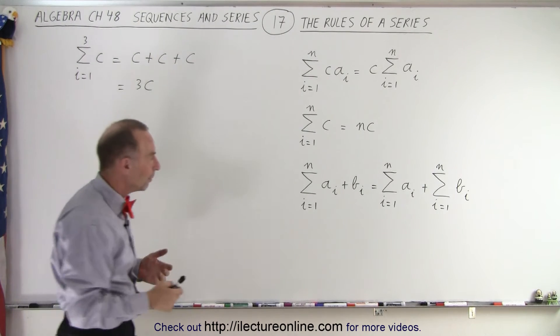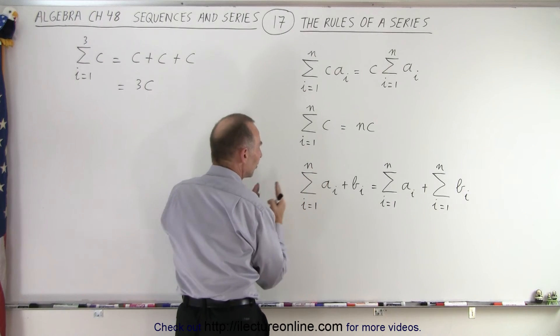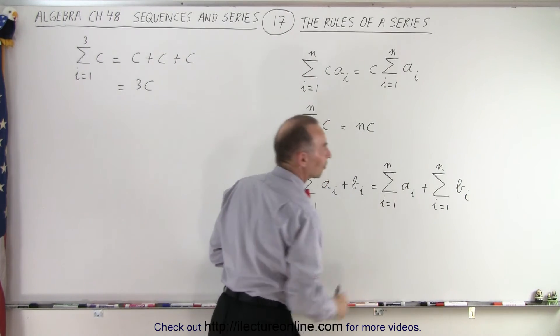And finally if we have the sum of a sub i plus b sub i for i going from 1 to n, we could simply separate them and write them as two separate sums.